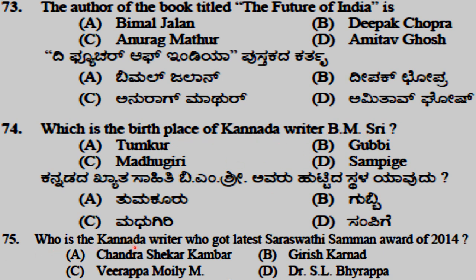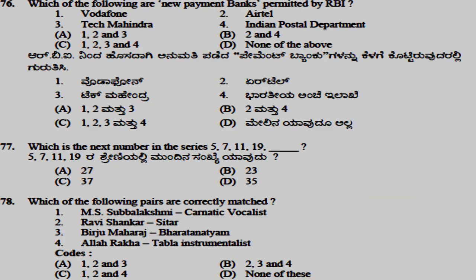The Kannada writer who got the latest Saraswati Samman award in 2014 is Veerappa Moily. Among the new payment banks permitted by RBI, Tech Mahindra is one. In the number series 5, 7, 11, 19, the next number is 35.